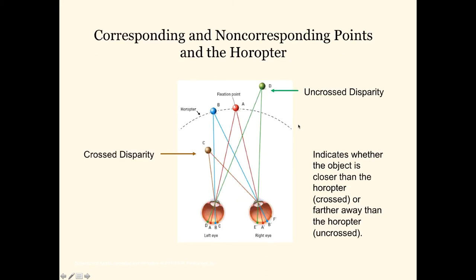Now let's consider other objects that are at different distances. Object D is further away, and it will not be on the same relative place on the left and right retinas because we're not looking at it and it is not on the horopter. However, points A and B will be on the same place on both retinas: we're fixating on point A and point B also happens to be on the same horopter. So A and B are at the same relative places on the left and right eye. Object D, the green object, is not on the horopter and will not be at the same relative place on the two retinas.